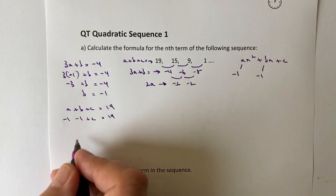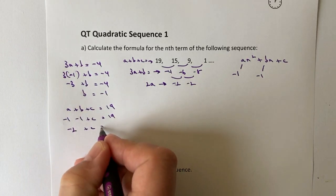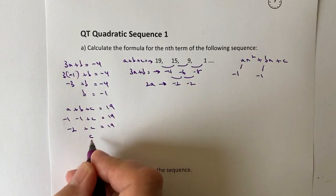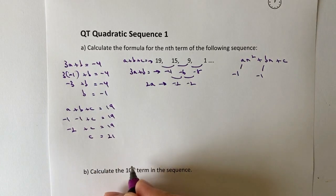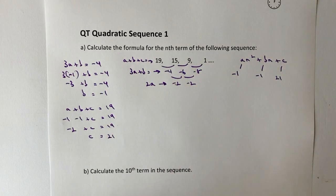So minus 1 minus 1 is going to give me minus 2, plus c equals 19. So if I add 2 to both sides, I get c equals 21. So my value of c is going to be 21.